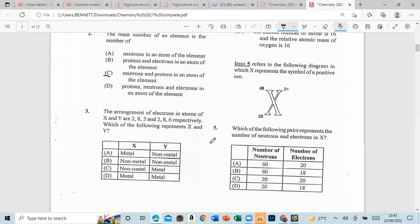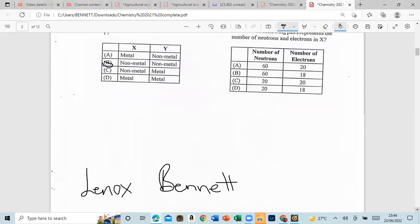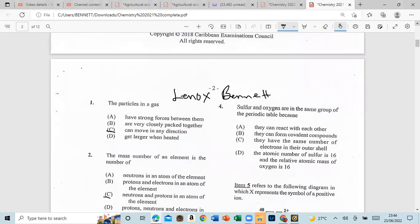Number three, the arrangement of electrons in atoms of X and Y are 2,8,5 and 2,8,6 respectively. You have to follow represent X, and we have to follow with Y, and that's D. X is a non-metal, Y is a non-metal.